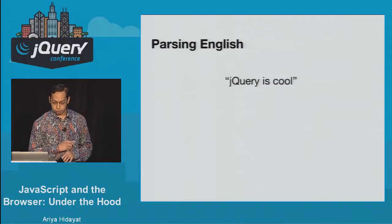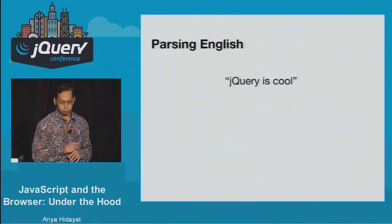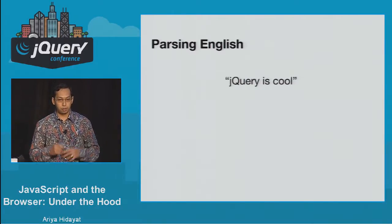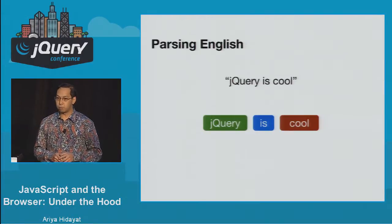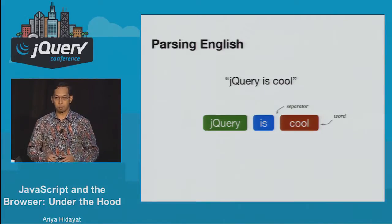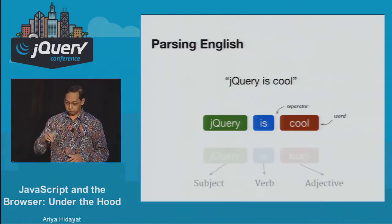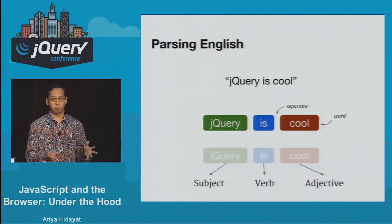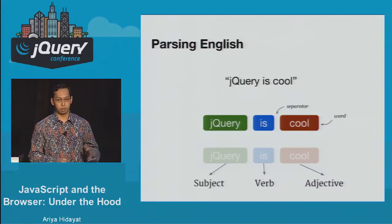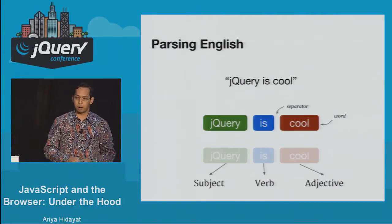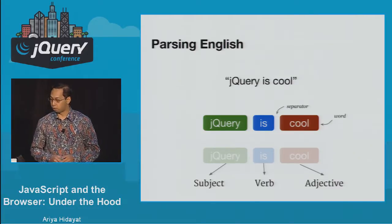Let's take a look at parsing. Parsing JavaScript — or parsing any programming language — is very similar to parsing human language. If someone says 'jQuery is cool,' your brain deconstructs the sentence into words. In many Western languages you can separate words by spaces, and your brain continues to understand that series of words into something resembling a meaningful expression with subjects and grammar.